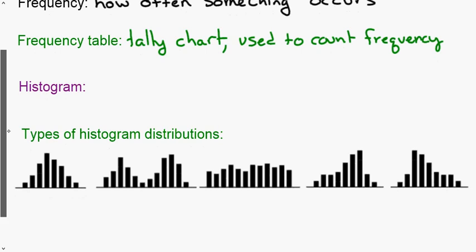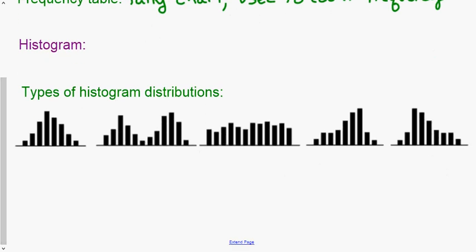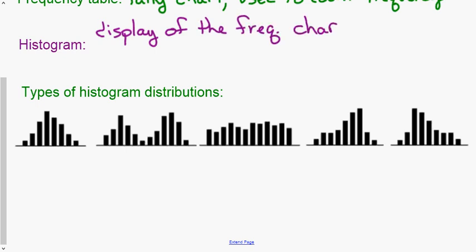A histogram is very similar to a bar graph. The difference is a bar graph displays qualitative data — like colors or categories — and how many times something happens within each category. Histograms are based on quantitative data, so you have a list of numbers that we break into intervals. A histogram is a display of the frequency chart.